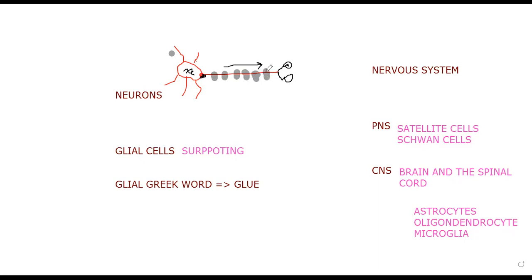Myelin sheaths are made up of fats and proteins. Fats are bad conductors of electricity — they do not transmit or propagate electrical impulses. Because the myelin sheath is lipid-based, it does not allow direct electrical conduction along that section of the axon.